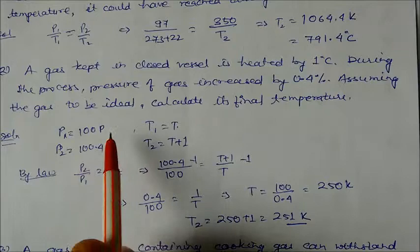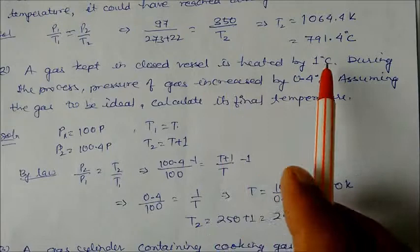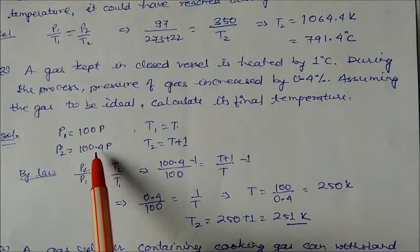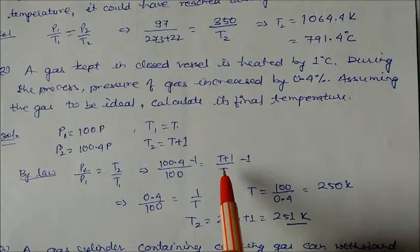By pressure-temperature law, P₂/P₁ = T₂/T₁. So 100.4P/100P = (T + 1)/T. P cancels. This gives 100.4/100 = (T + 1)/T.